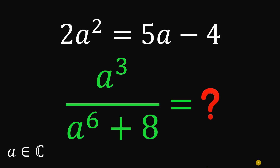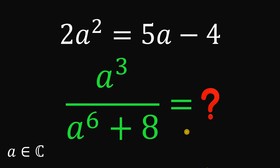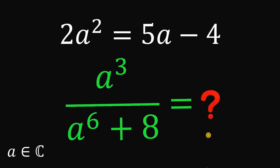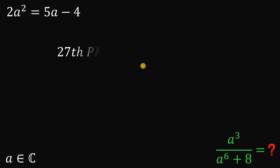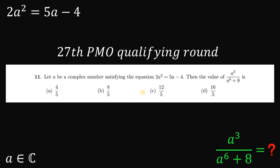Today we will answer an item from the 27th Philippine Mathematical Olympiad qualifying round. The question: given the equation 2a² = 5a - 4, where a is a complex number, what is the numerical value of a³ over a⁶ + 8? Pause this video and see if you can answer this. The question comes from the 27th PMO qualifying round — check out their page, Philippine Mathematical Olympiad.